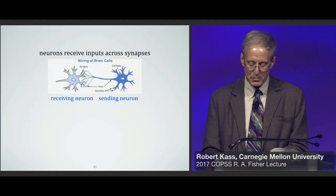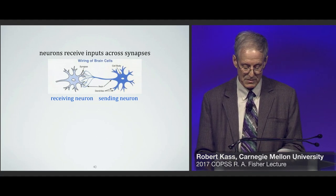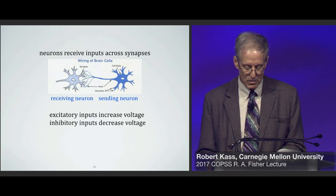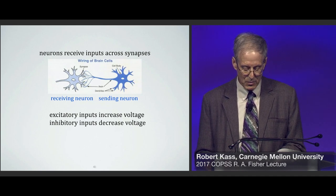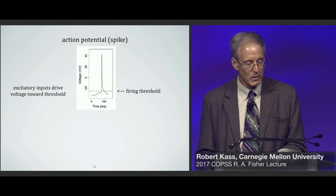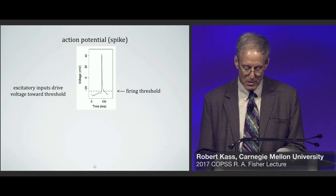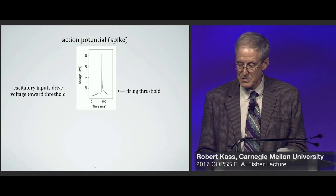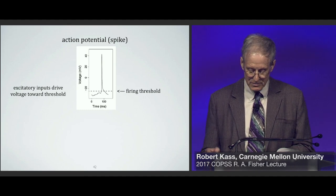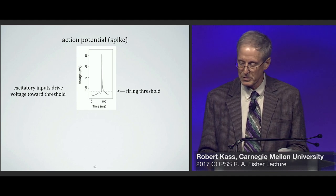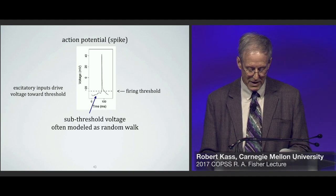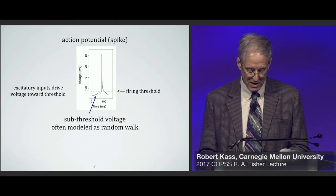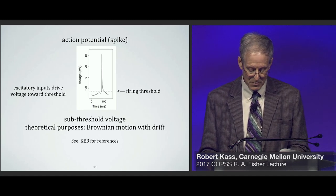Action potentials are generated as a result of inputs from other neurons across synapses, and these inputs can be either excitatory or inhibitory. Excitatory inputs increase the electrical potential — the voltage — while inhibitory inputs decrease the voltage, with excitatory or inhibitory inputs driving the voltage toward or away from the threshold at which the neuron will fire. The subthreshold voltage is often modeled as a random walk of upward and downward voltage steps drifting toward the firing threshold, and after passing to the limit, the random walk becomes Brownian motion with a drift.